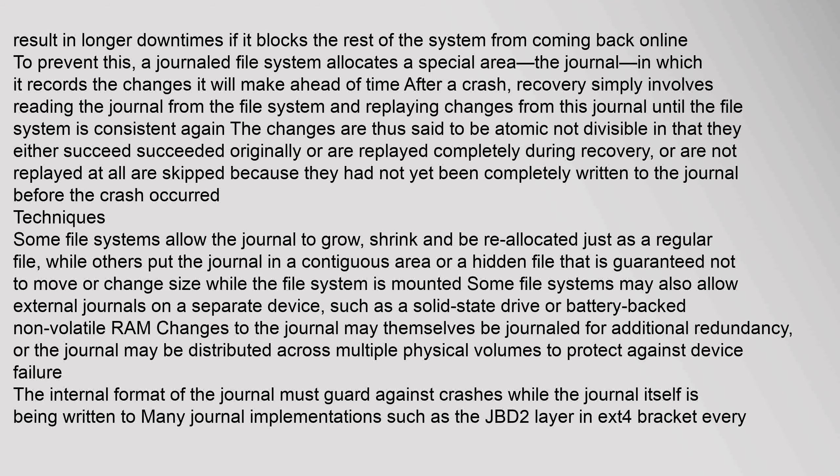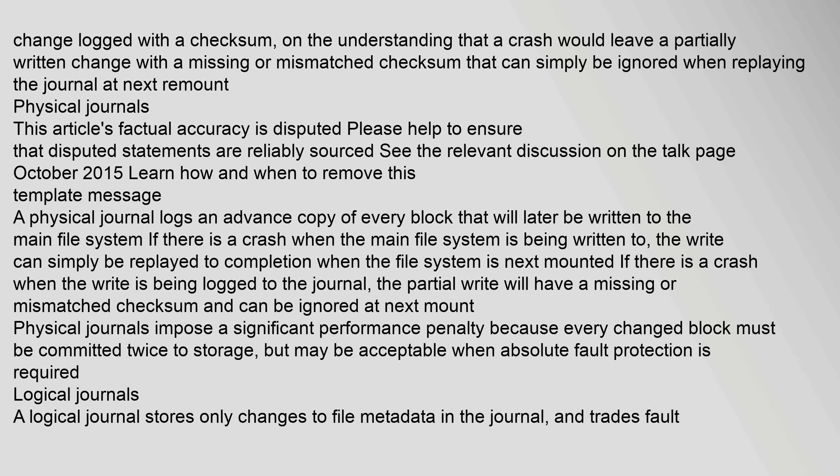Some file systems allow the journal to grow, shrink, and be reallocated just as a regular file, while others put the journal in a contiguous area or a hidden file that is guaranteed not to move or change size while the file system is mounted. Some file systems may also allow external journals on a separate device, such as a solid-state drive or battery-backed non-volatile RAM. Changes to the journal may themselves be journaled for additional redundancy, or the journal may be distributed across multiple physical volumes to protect against device failure. The internal format of the journal must guard against crashes while the journal itself is being written to. Many journal implementations, such as the jbd2 layer in ext4, bracket every change logged with a checksum, so that a crash would leave a partially written change with a missing or mismatched checksum that can simply be ignored when replaying the journal at next remount.